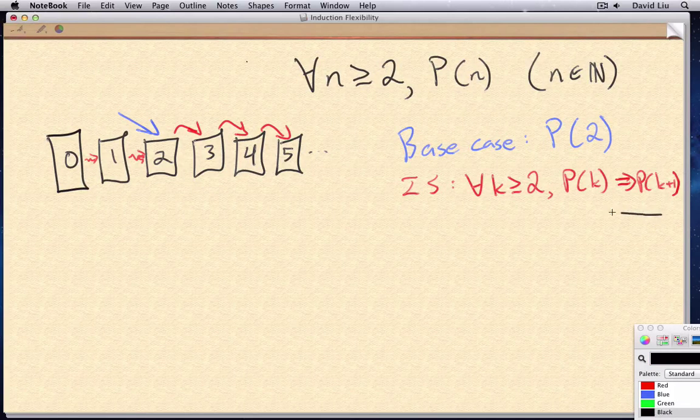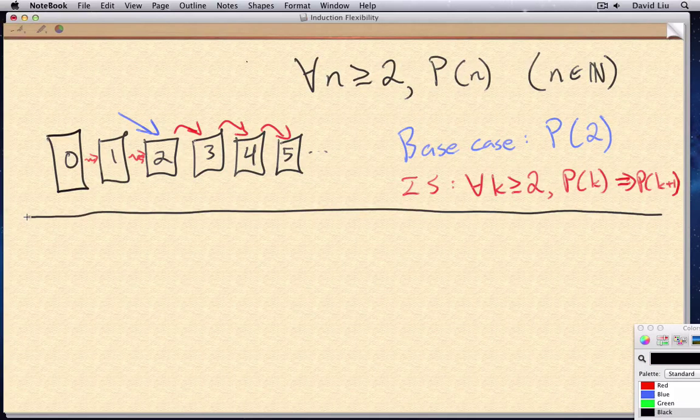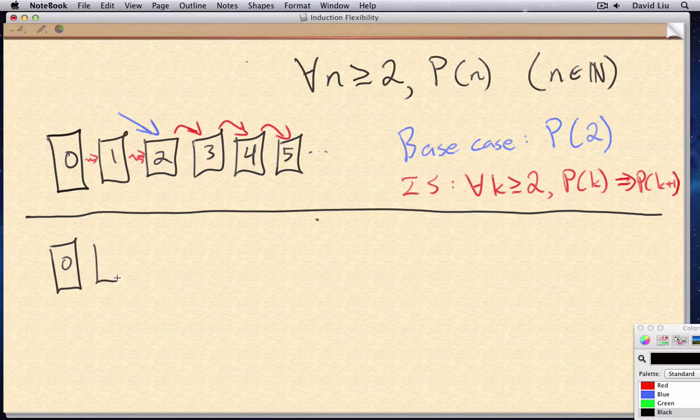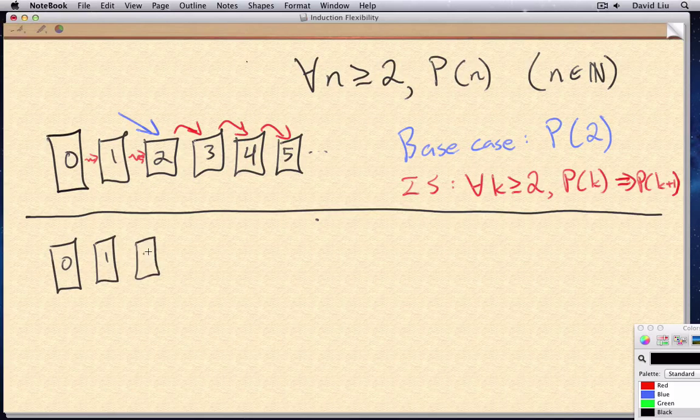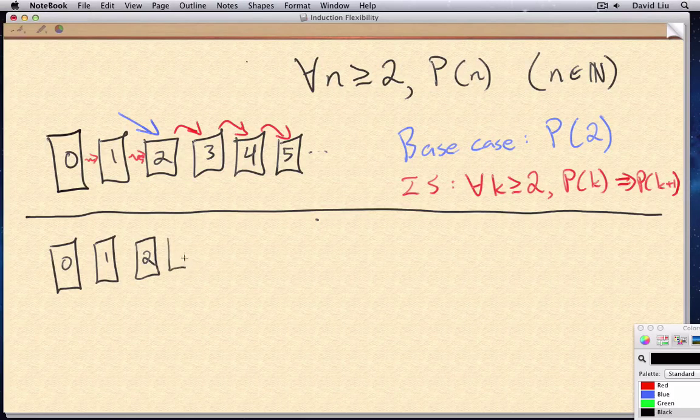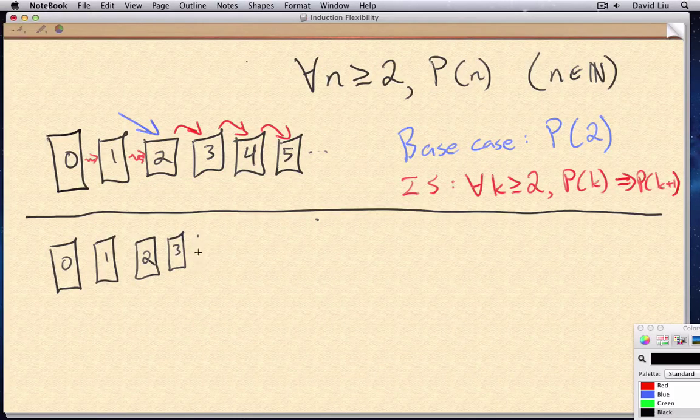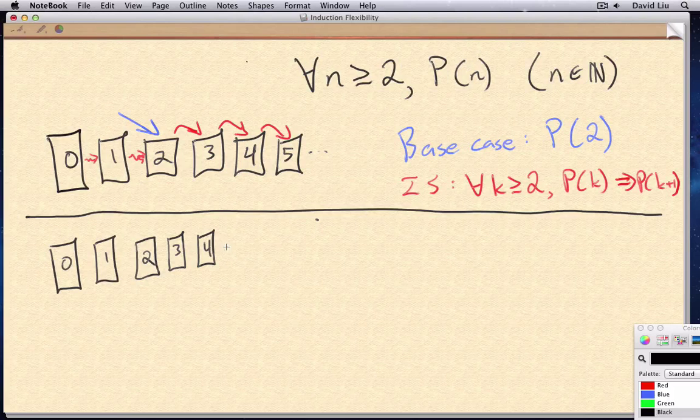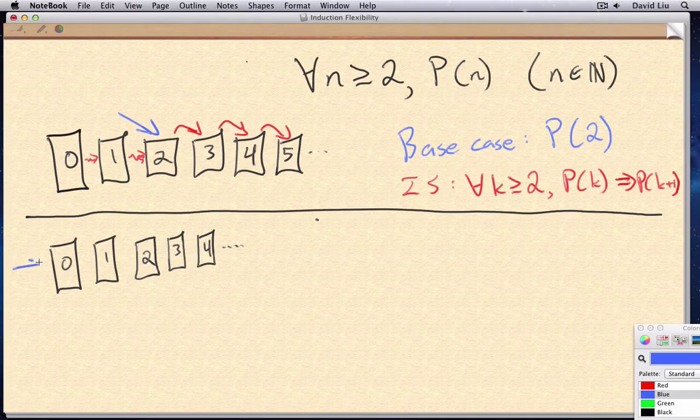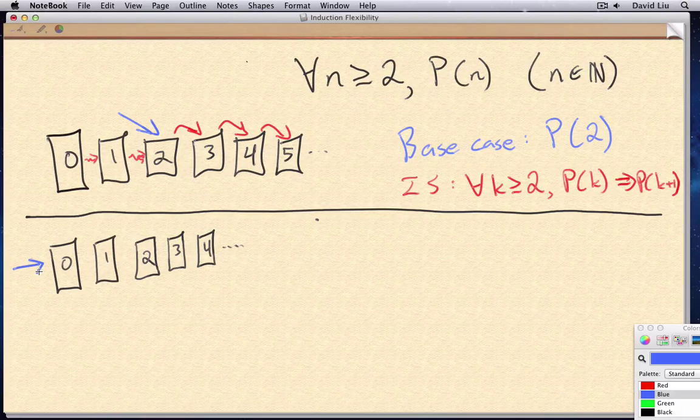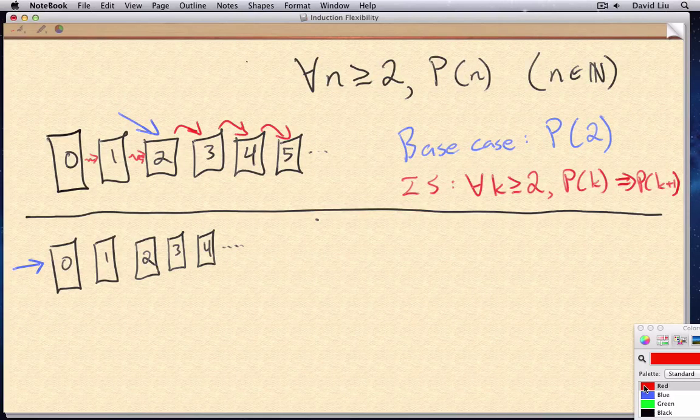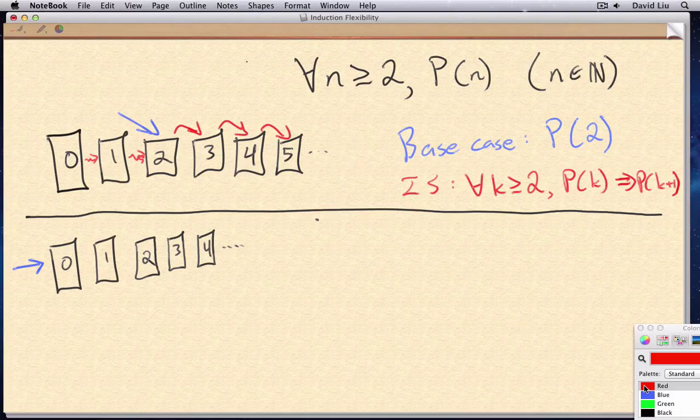So that's changing the base case. But what about changing the induction step? We can do that too. And our base case remains the same, starting at zero. But now somehow our dominoes skipped over each other.